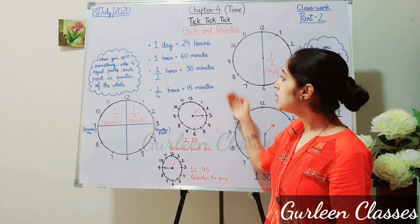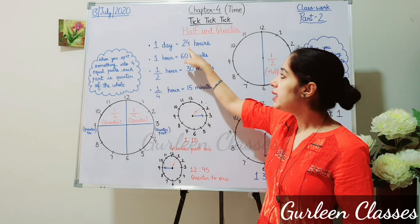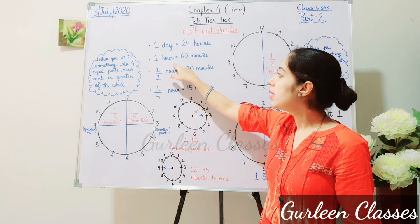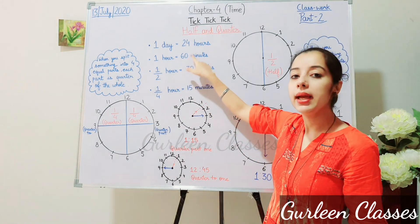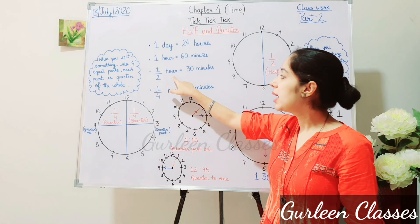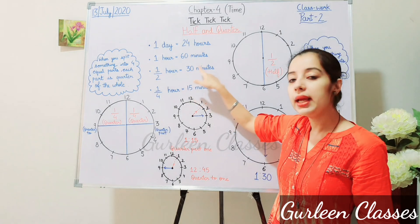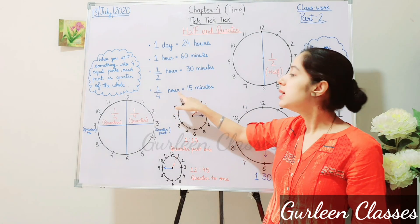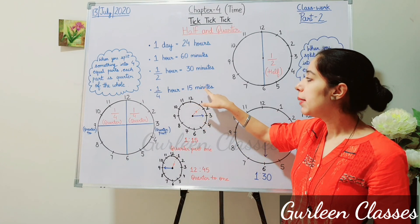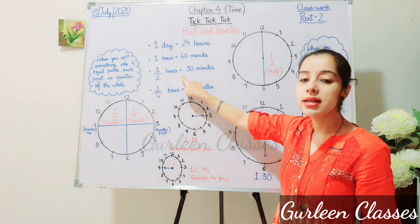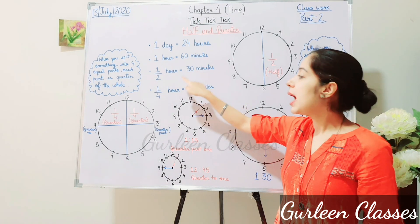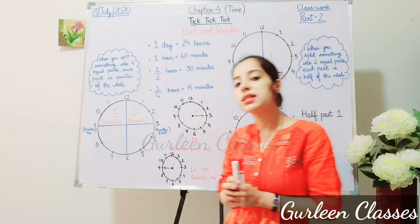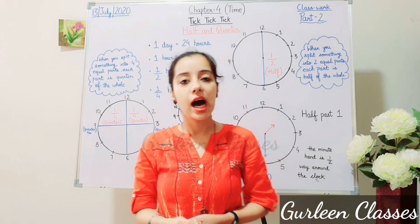Let us revise: 1 day is equal to 24 hours. 1 hour is equal to 60 minutes. Half an hour is equal to 30 minutes. And one-fourth of an hour, that is a quarter, is equal to 15 minutes. I hope the topic of half and quarter is clear.